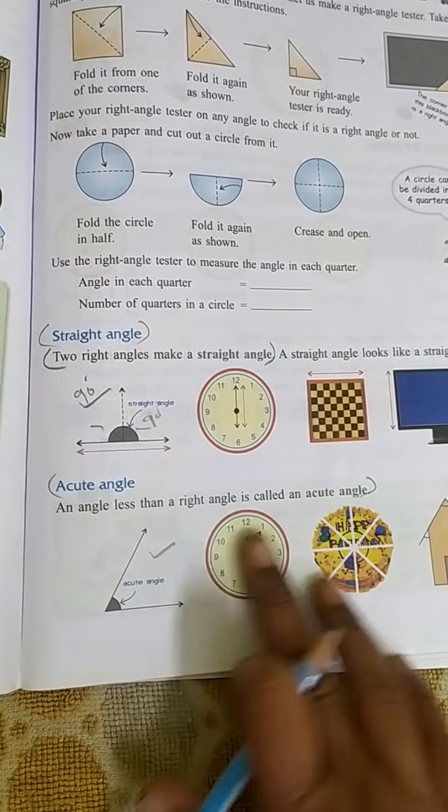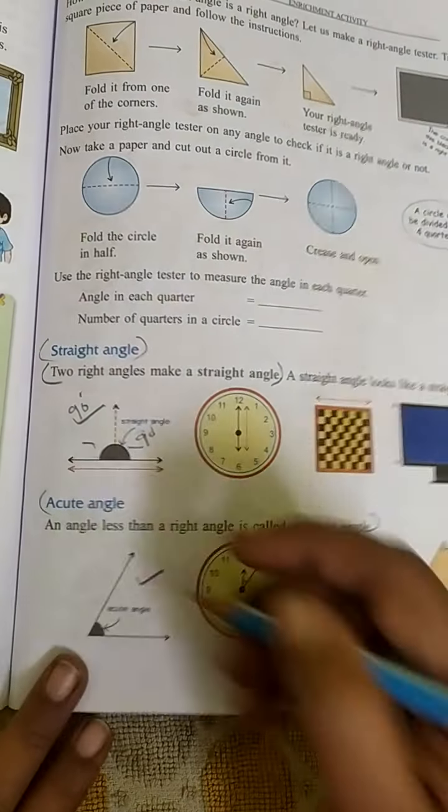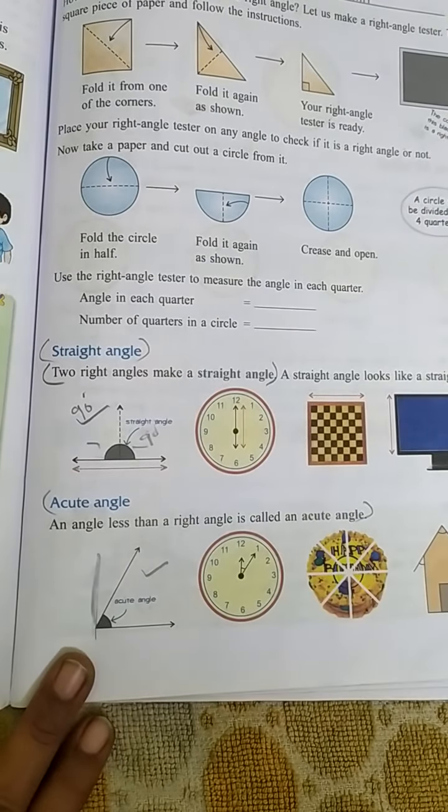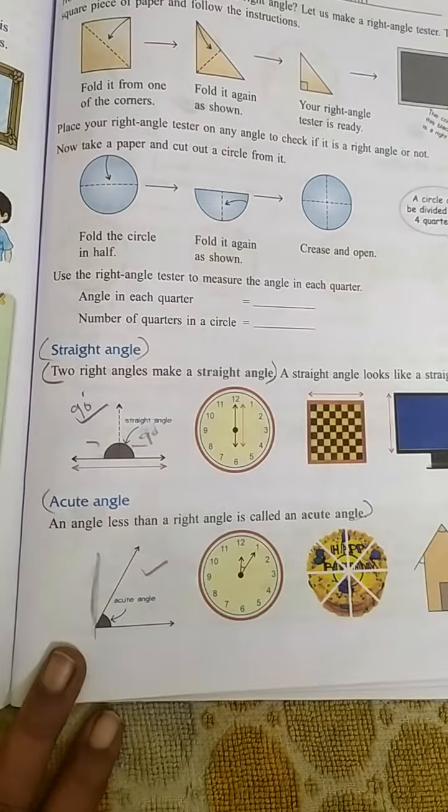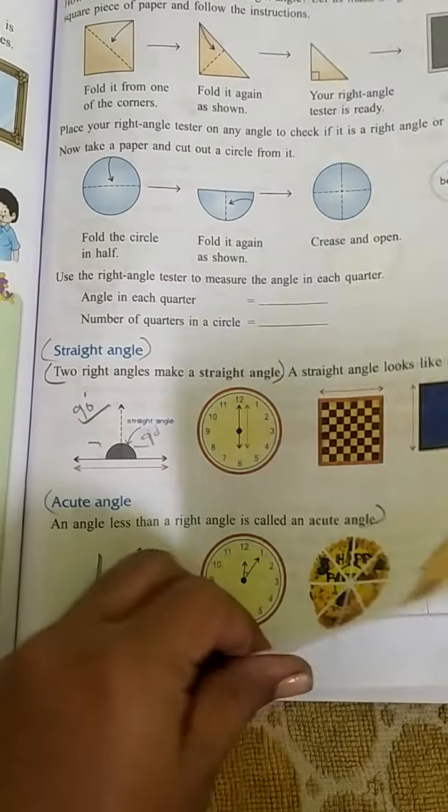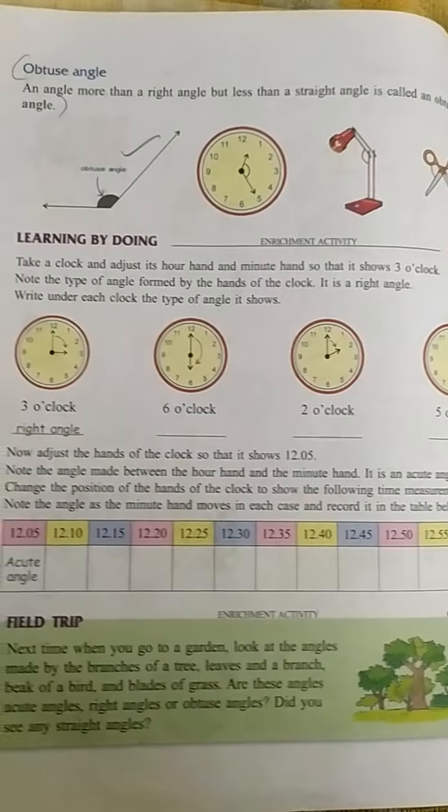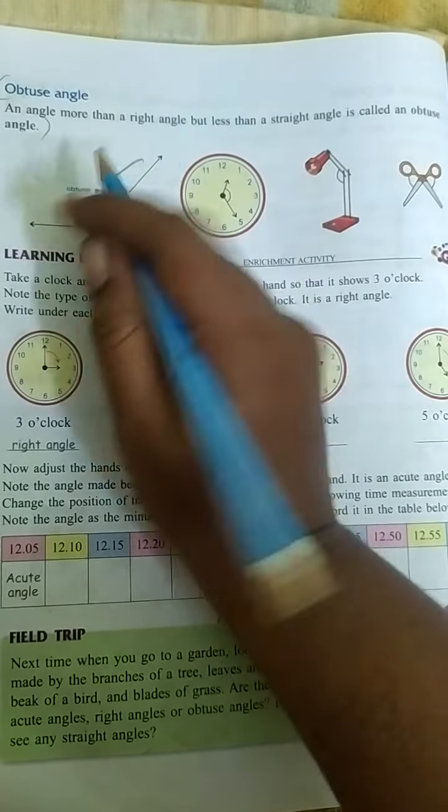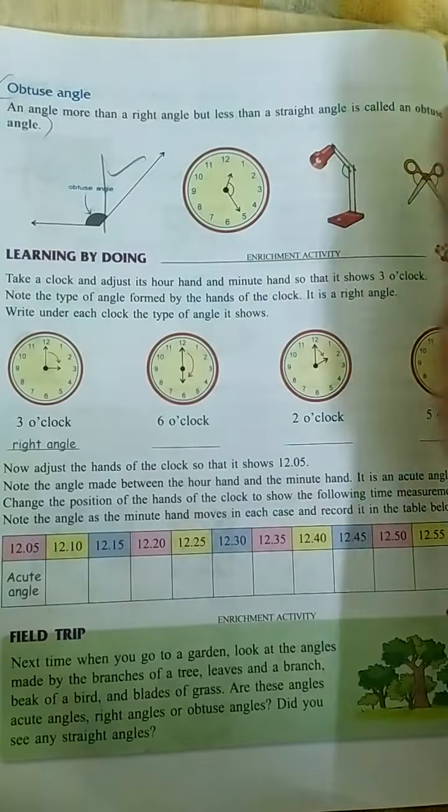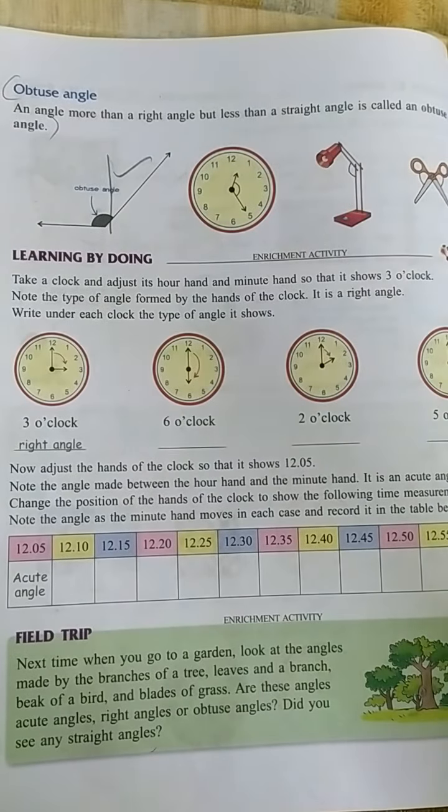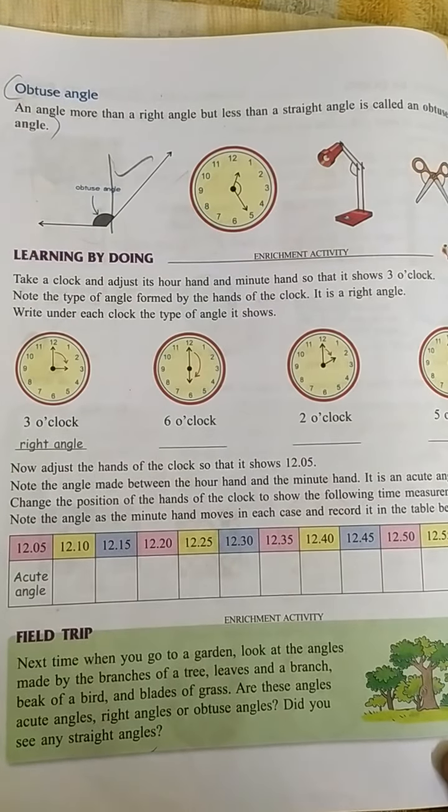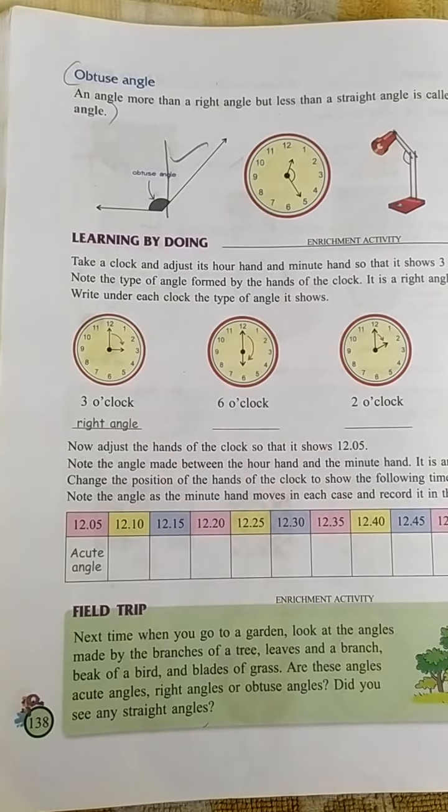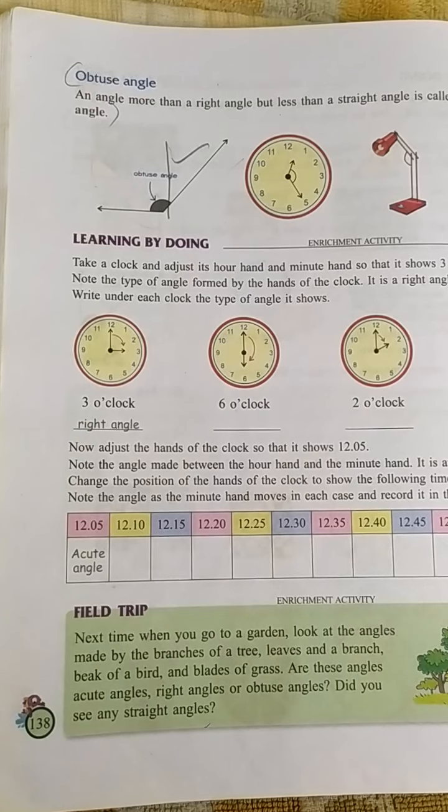An acute angle means an angle less than a right angle. Right angle is like L shape. The angle less than right angle, we call all those angles acute angle. And the angle more than right angle, see the L shape is like this, it is crossing the L. The angle which is more than right angle, we call it obtuse angle. So today's class we have learned the basic concepts and types of angles.